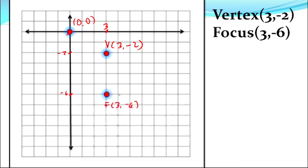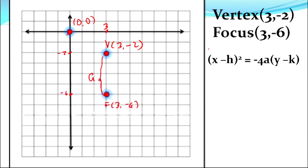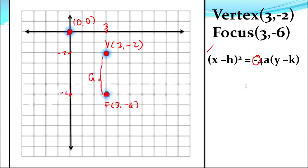One important thing to know here: the value of A is just the distance from the vertex to the focus. Counting from the vertex at y = -2 to the focus at y = -6, that distance is 1, 2, 3, 4 — so A is equal to 4. We'll use the formula with (x - h)² and a negative sign, which is the indicator for downward opening. A equals 4 regardless of the direction.